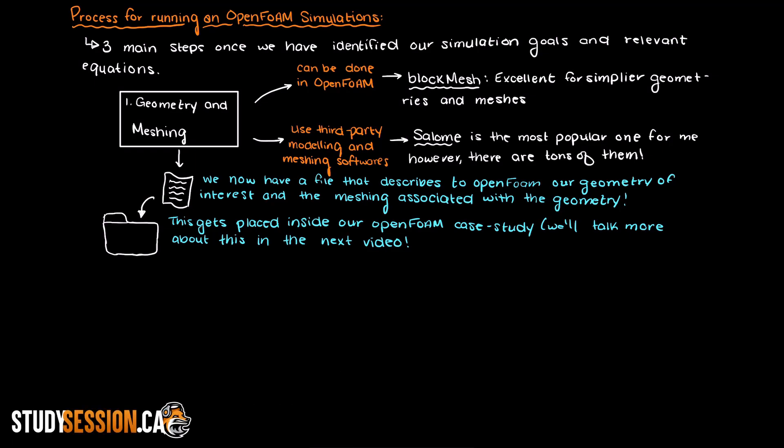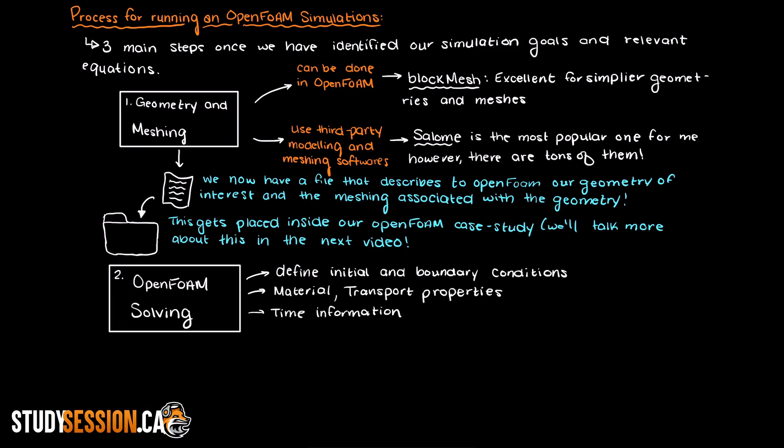In the second stage of our OpenFoam simulation, we need to tell OpenFoam information about our system. By that I mean we define initial and boundary conditions, material properties, or any other information that OpenFoam may require for our system.